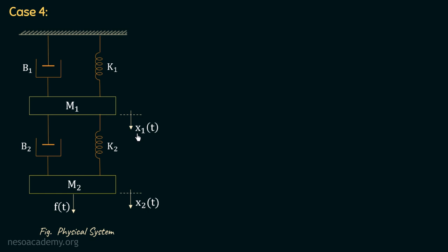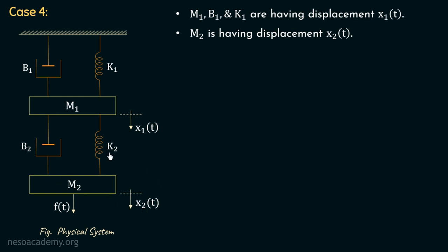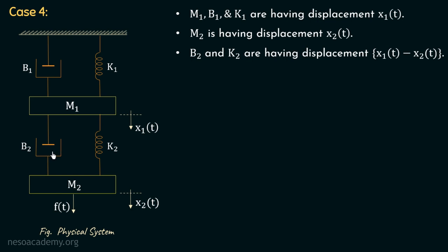In step one, we identify two displacements: x1(t) and x2(t). In step two, mass M1, damper B1, and spring K1 all have displacement x1(t). Damper B2 and spring K2 have one end at displacement x1(t) and the other at x2(t), so their net displacement is x1(t) minus x2(t). Mass M2 has displacement x2(t).